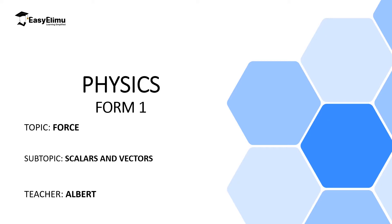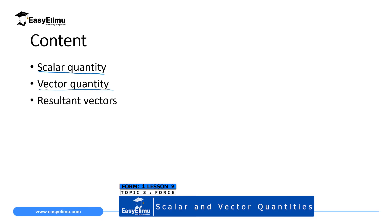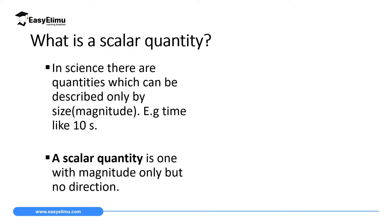Welcome to ECLMU Learning Simplified. In the previous lesson, when we were discussing differences between mass and weight, we mentioned that mass is a scalar quantity and weight is a vector quantity. In this lesson, we are going to discuss scalars and vectors. My name is Albert. By the end of this lesson, I expect you to be able to define a scalar quantity and give examples, define a vector quantity and give examples, and calculate the resultant vector.